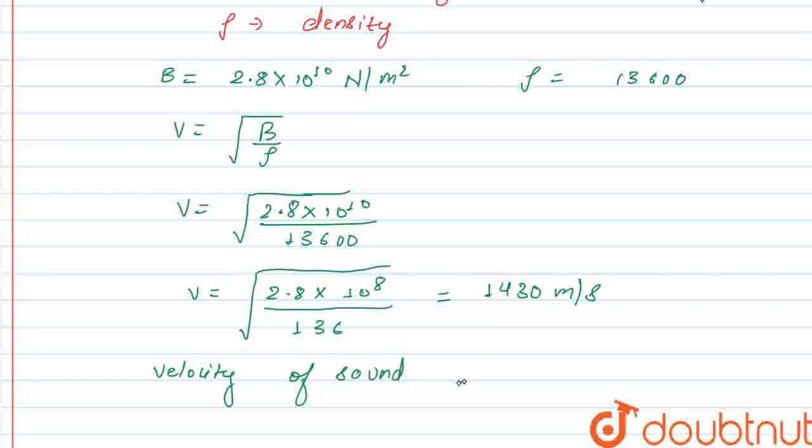So this is velocity of sound in mercury, which is equal to 1430 meter per second. I hope you guys understand.